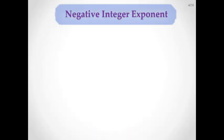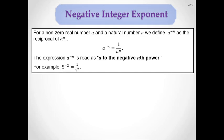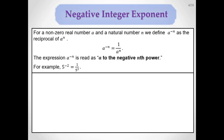Now let's look at the negative integer exponent. Assume A is a non-zero real number and N is a natural number. We define A to the negative N as the reciprocal of A to the N. So A to the negative N equals 1 over A to the N. For example, 5 to the negative second power is 1 over 5 squared.